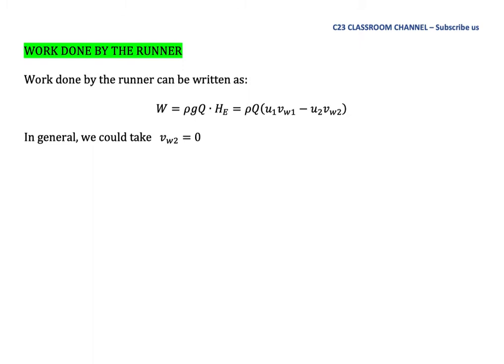Work done by the runner can be written as W = ρgq × H_Euler. It can also be written as ρq(u1·Vw1 - u2·Vw2). In general, we can take the whirl velocity at the outlet, Vw2, equal to zero.